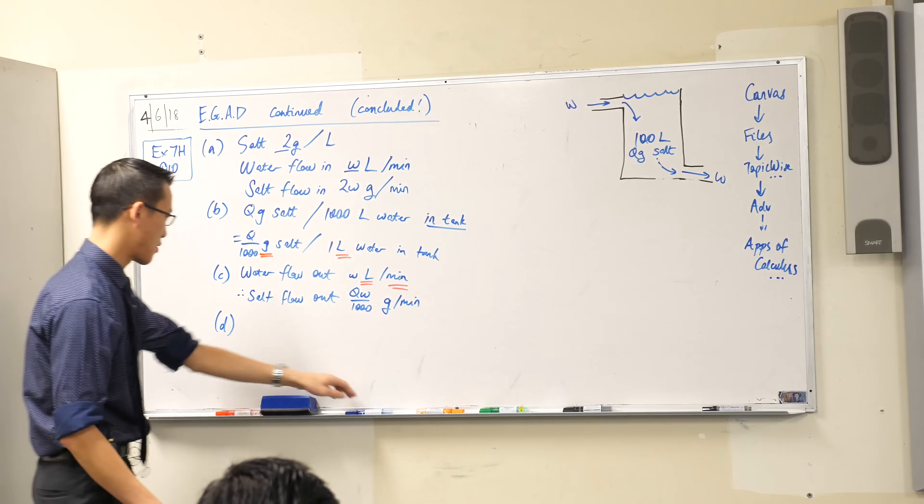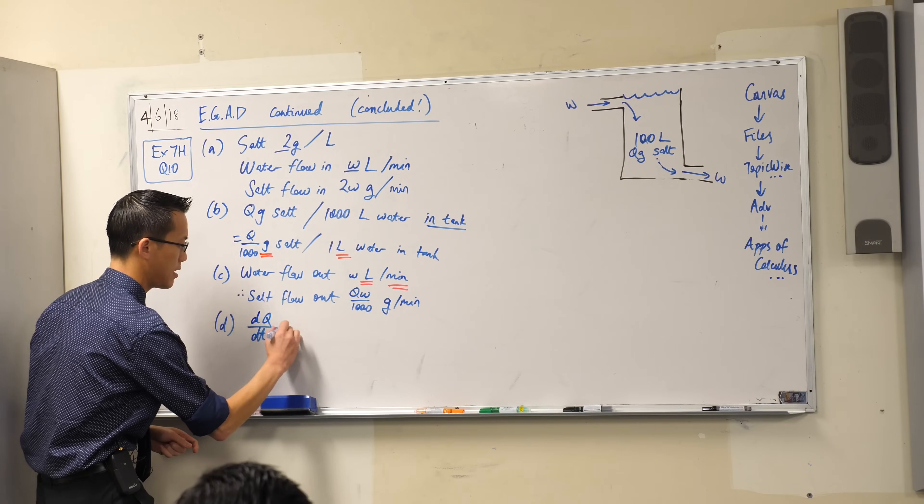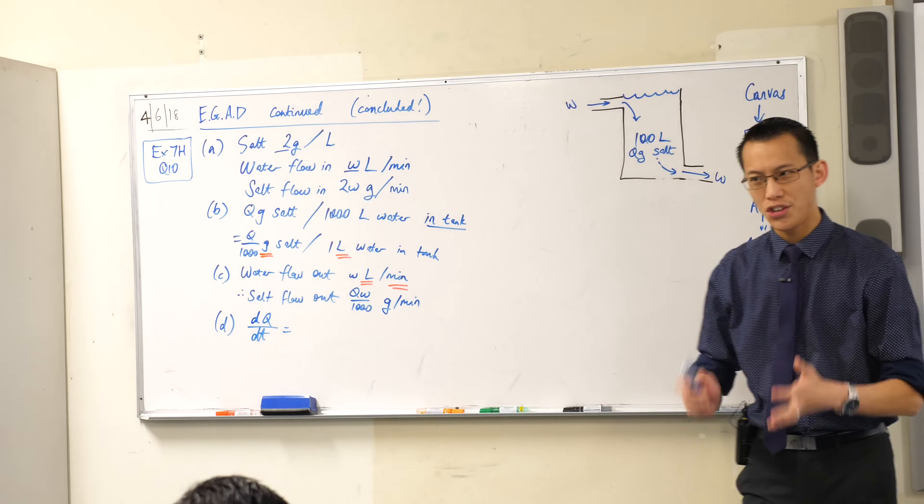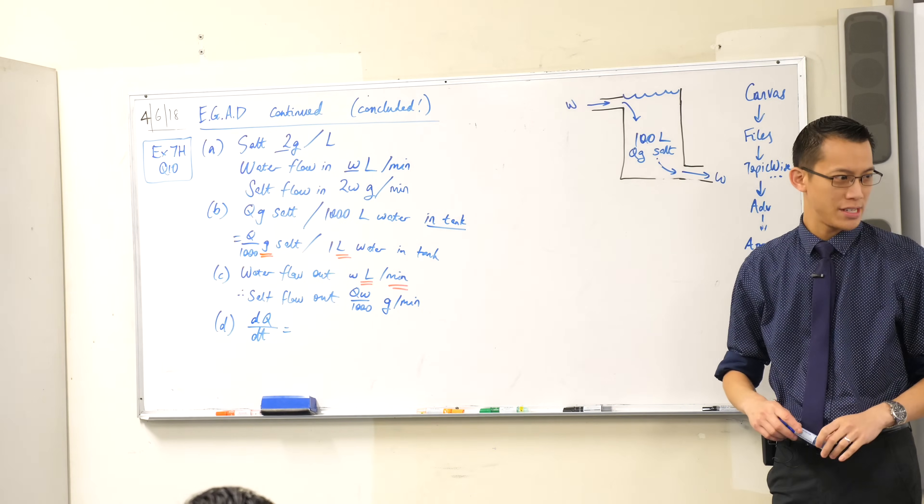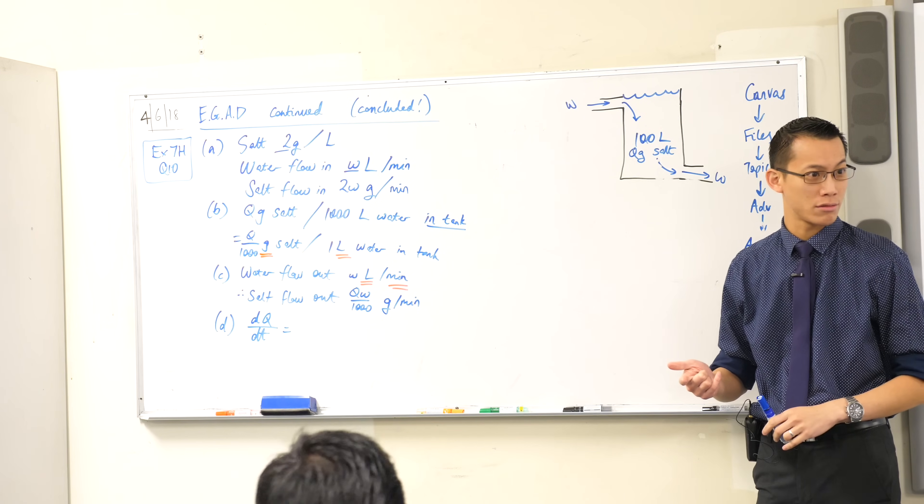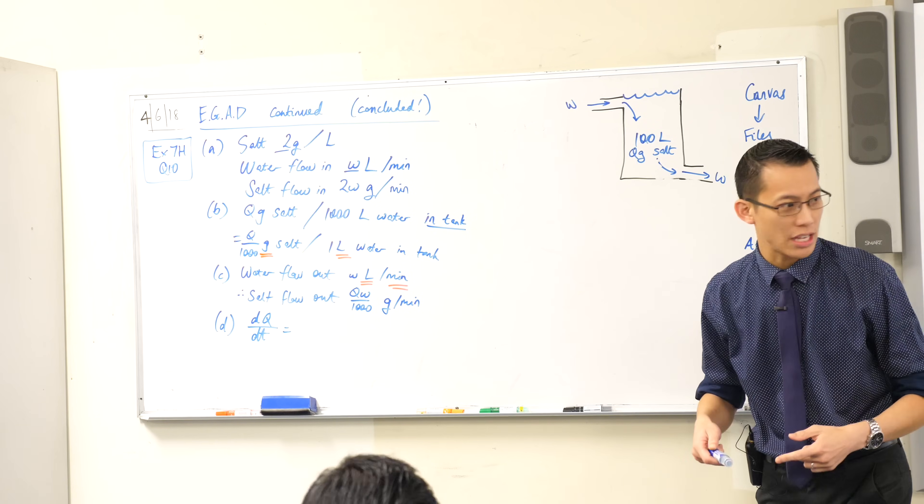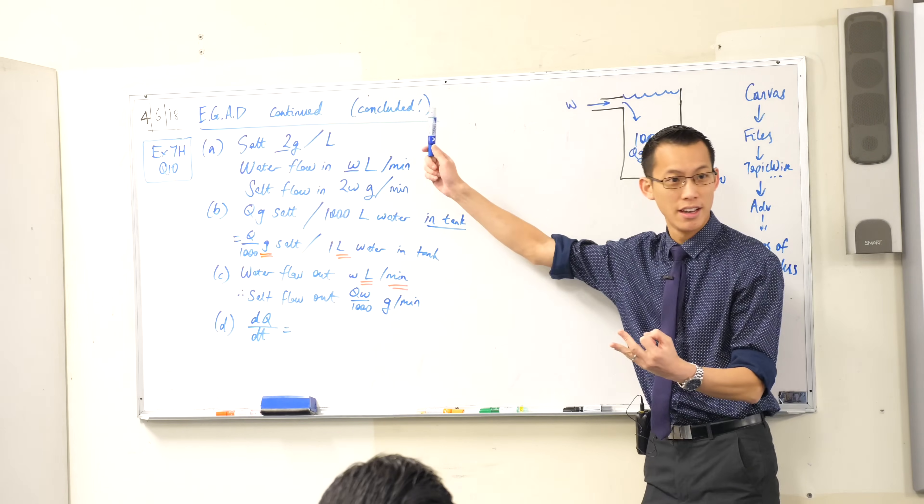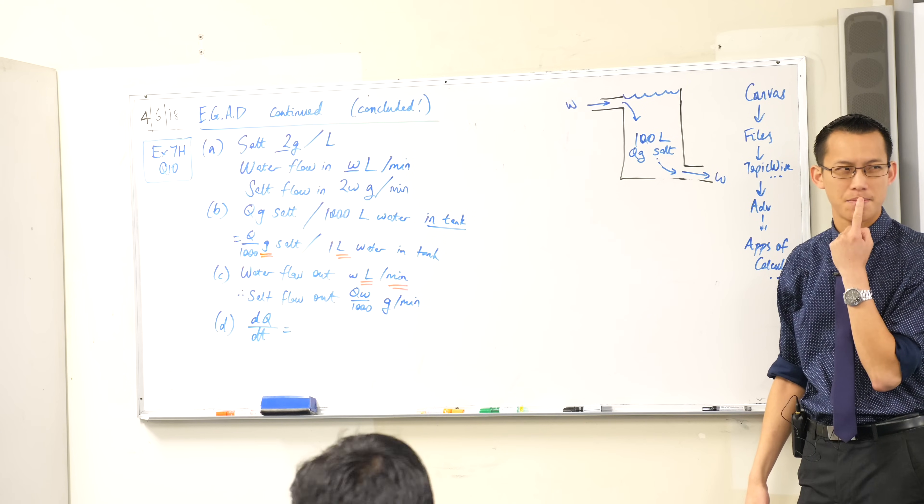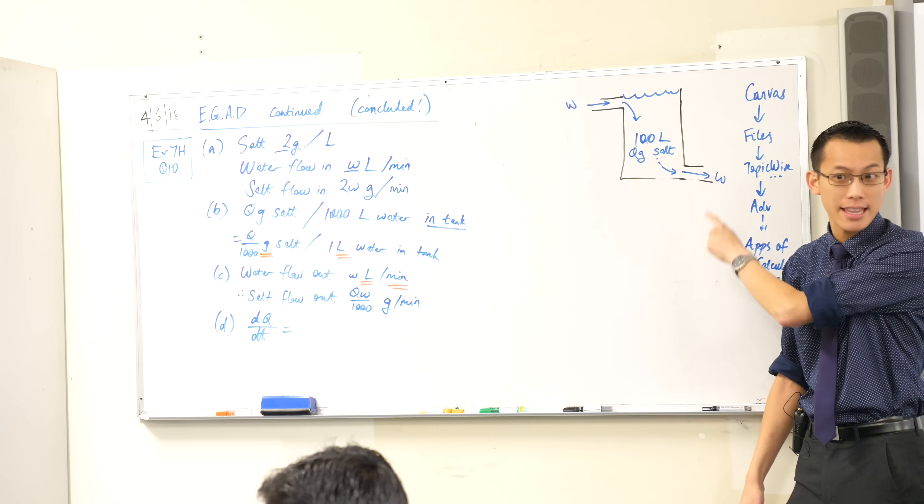It says DQ on DT. Let's write that down. DQ on DT. That's one that they want us to work with. Now think about what Q and T represent. I've got it written on my diagram. Have you got it written on your diagram? What is Q? It's the salt. Which salt? There's like three different salts here. There's salt in, there's salt out. Which salt is it?